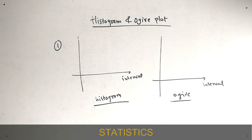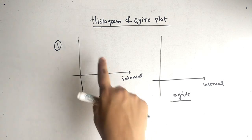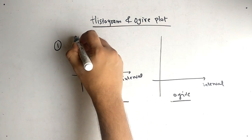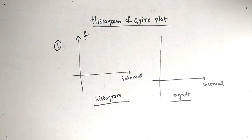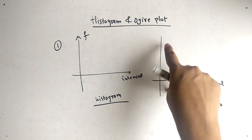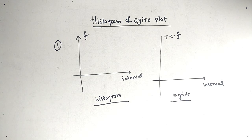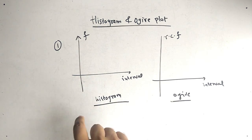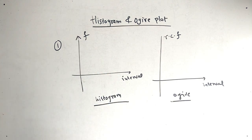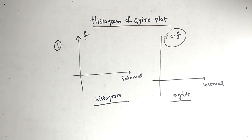When we talk about a Histogram, on the x-axis we have interval and on the y-axis we have frequency. When we talk about the Ogive graph, on the x-axis we have interval but on the y-axis we have relative cumulative frequency.